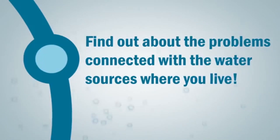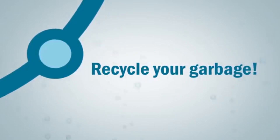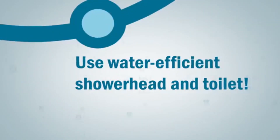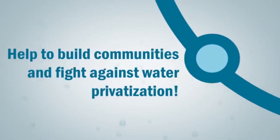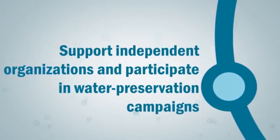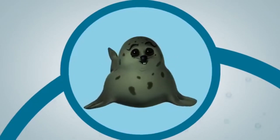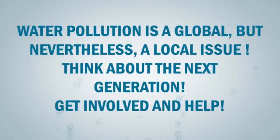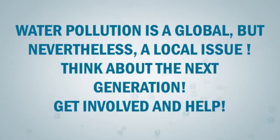Inform yourself — find out about the problems connected with the water sources where you live. Avoid using plastic bags and bottles. Recycle your garbage. Use water-efficient showerheads and toilets. Buy more locally produced products. Help to build communities and fight against water privatization. Support independent organizations and participate in water preservation. Water pollution is a global but nevertheless a local issue — think about the next generation, get involved, and help.